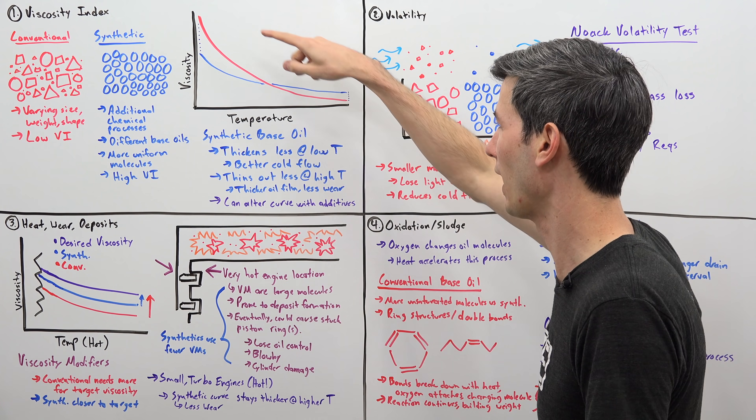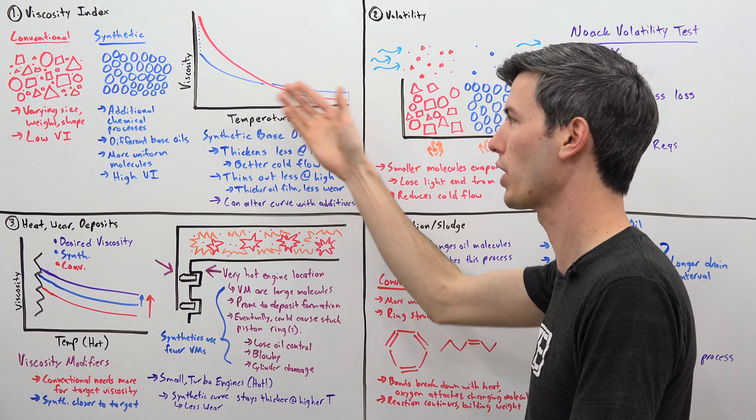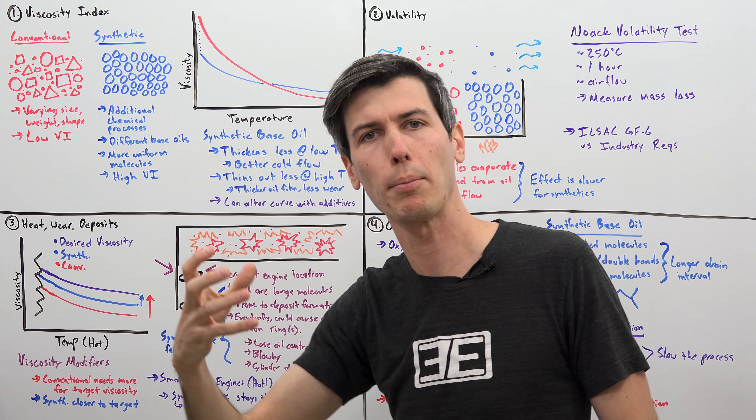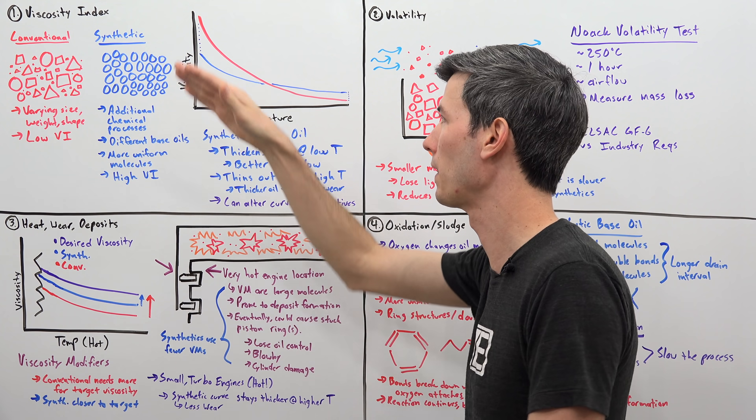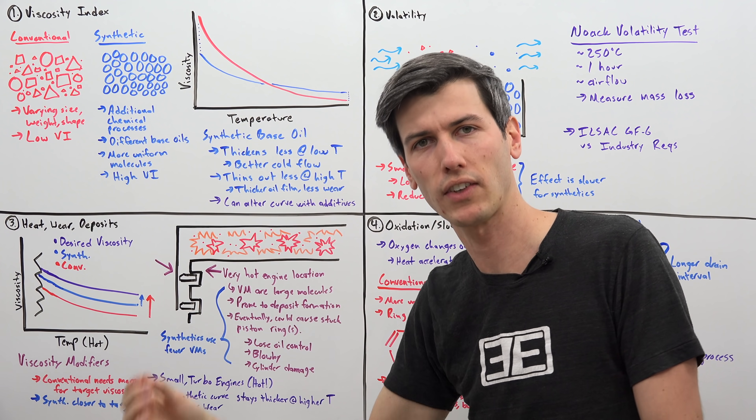Now does that mean that you can't have similar curves for a conventional or synthetic oil? No, you can change these curves using additives. But the bulk of what makes up a motor oil is the base oil. And the base oil in a synthetic will have better characteristics as far as its viscosity index.